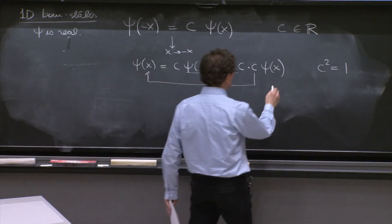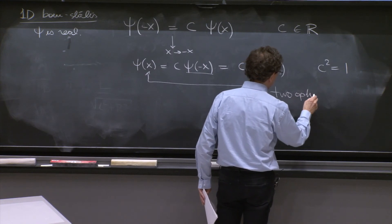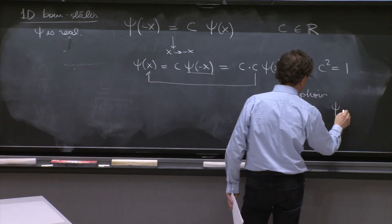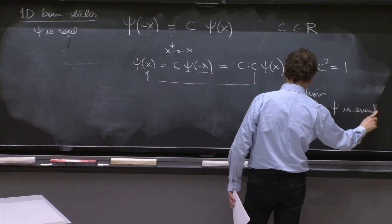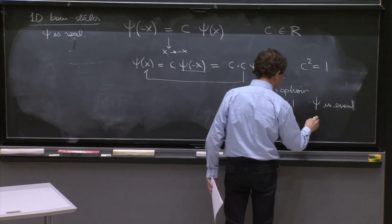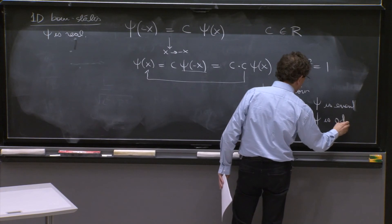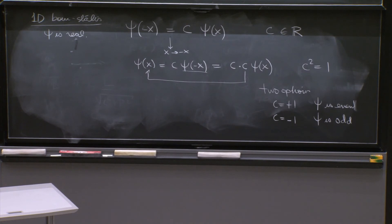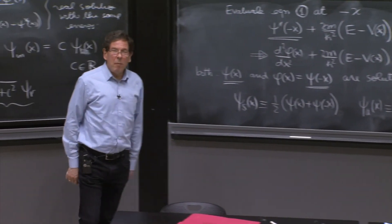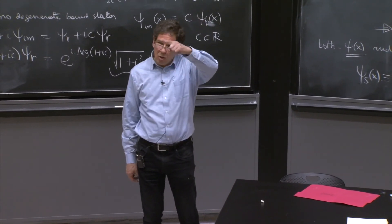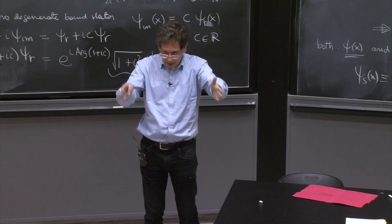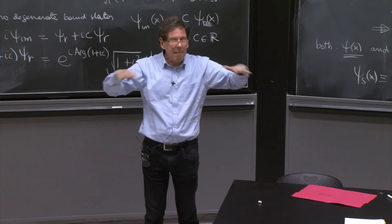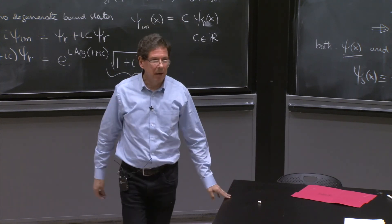So therefore, there's only two solutions, two options. C is equal to plus 1, in which case, ψ is even automatically. Or c is equal to minus 1, and ψ is odd. So you have no option. You may think that the general solution of a bound state of a symmetric potential could be arbitrary. But no, the solutions come out automatically symmetric or anti-symmetric.